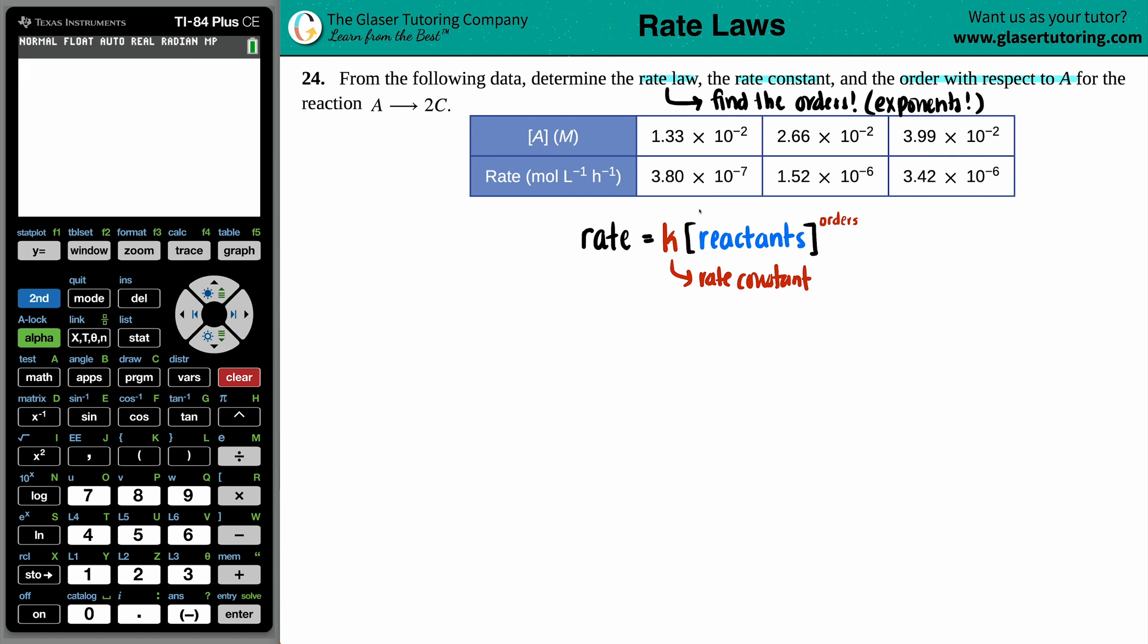So now, we only have one reactant, which is A, and that's why they gave us the concentrations for A. Notice how the rate law only includes the reactants. So as far as the products go, nobody cares. Don't even worry about them. So let's see. Well, how am I going to find these orders? Well, we have to set up a ratio. We have to set up a change from one trial to the next.